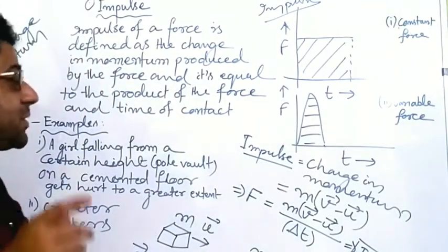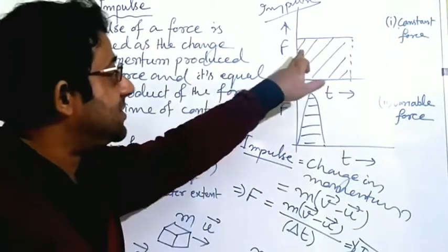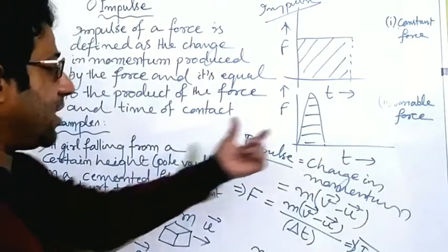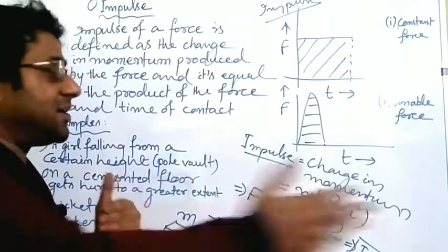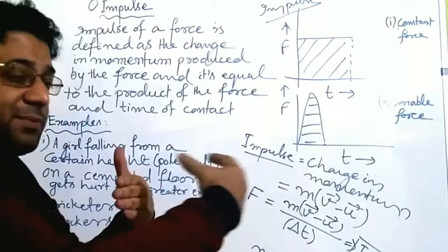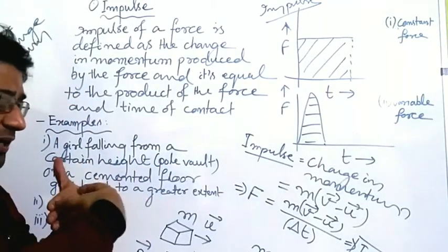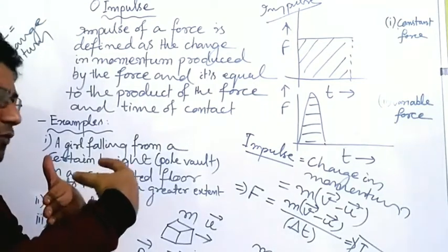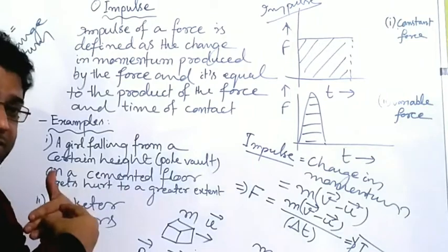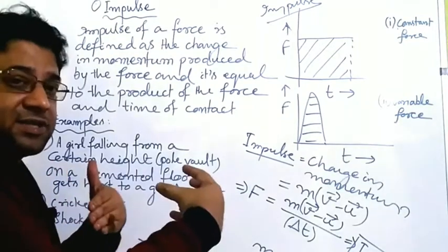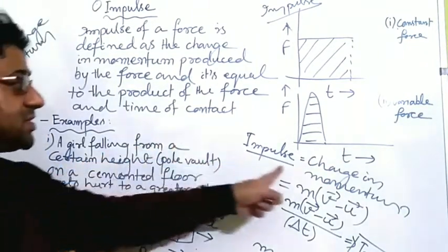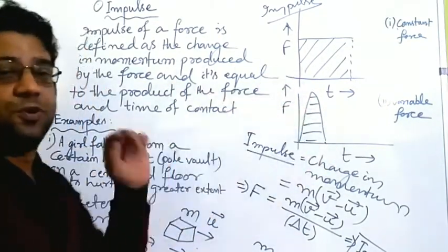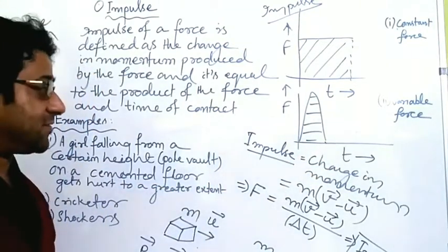In case two, if the force is varying suddenly — it becomes large and then falls back — the impulse is the area under that curve. It is in this type of case, where there is a sudden variation of force, that the word impulse is generally used. As we discussed, the ball coming to the cricket bat — before contact the force was zero, for a tiny fraction like 0.25 seconds it is in contact, and again when contact is left, force becomes zero. This happens within a tiny fraction of a second.